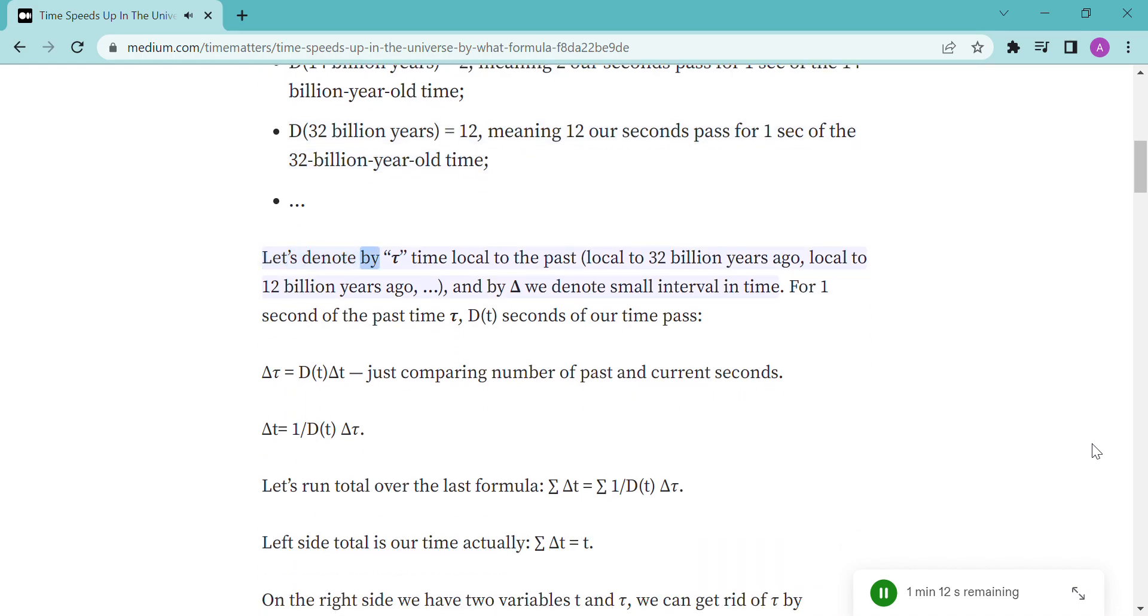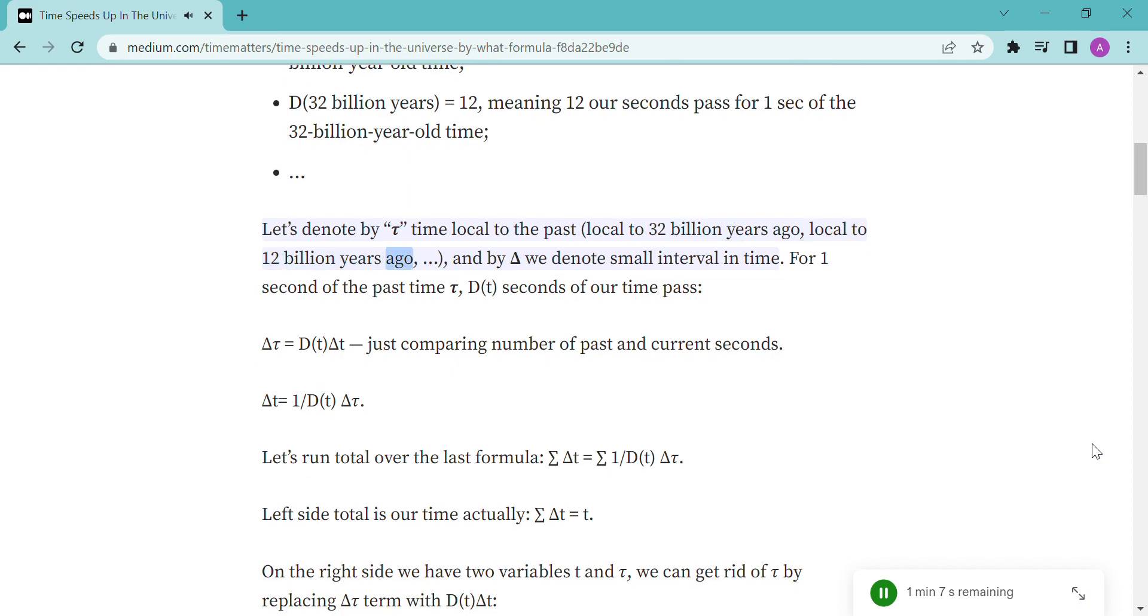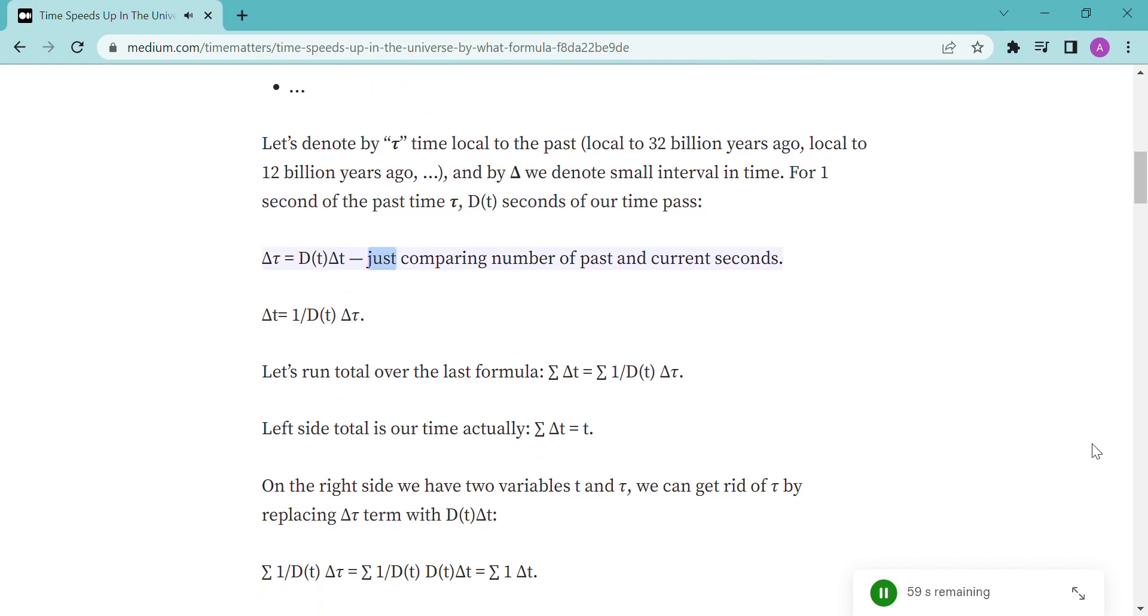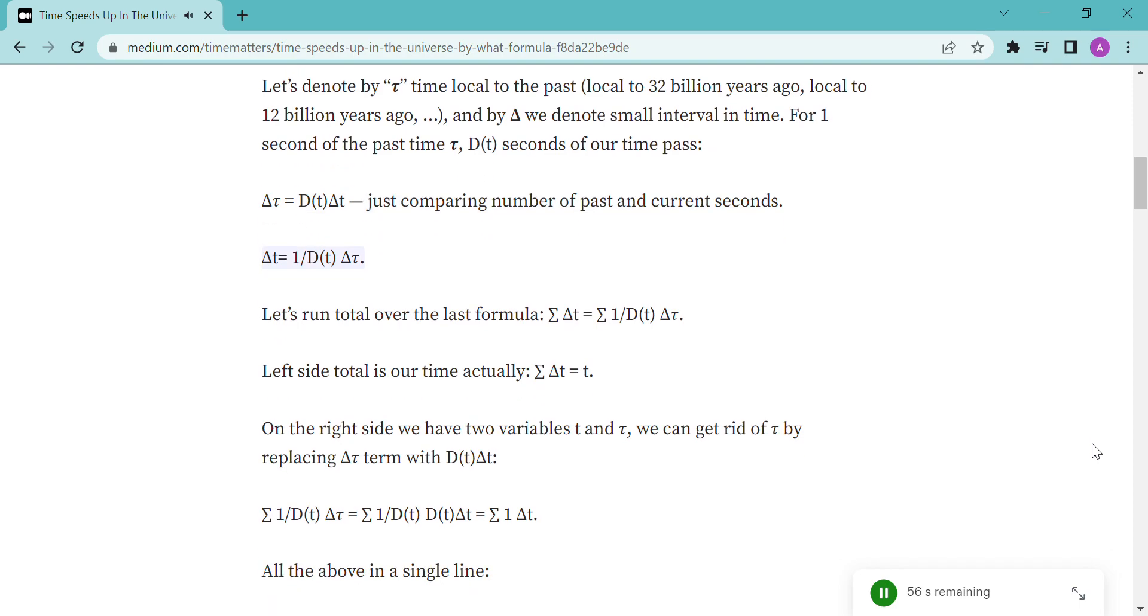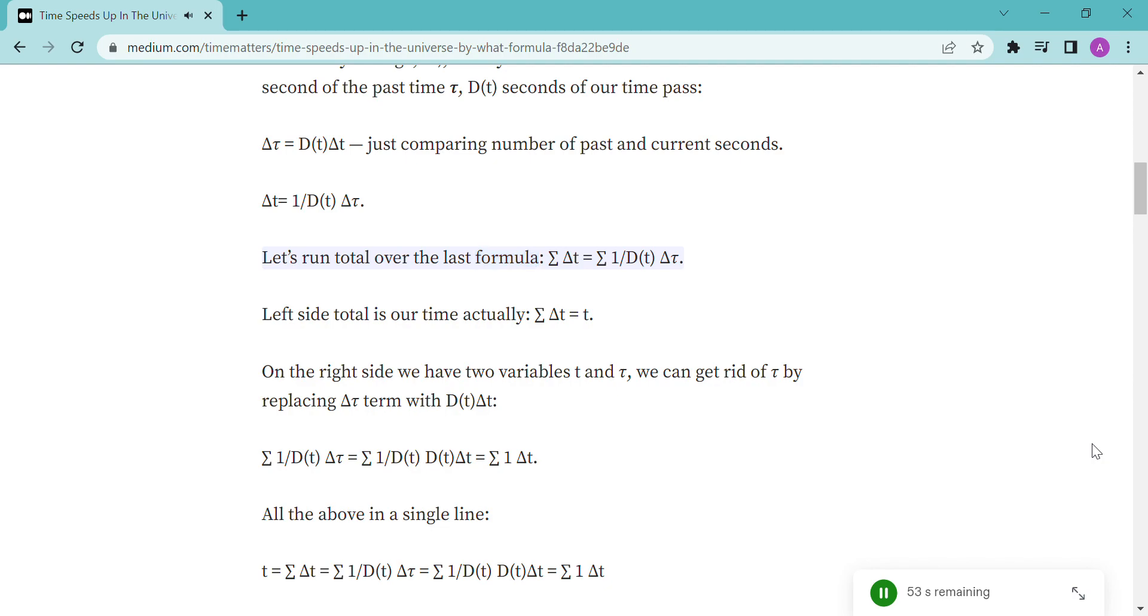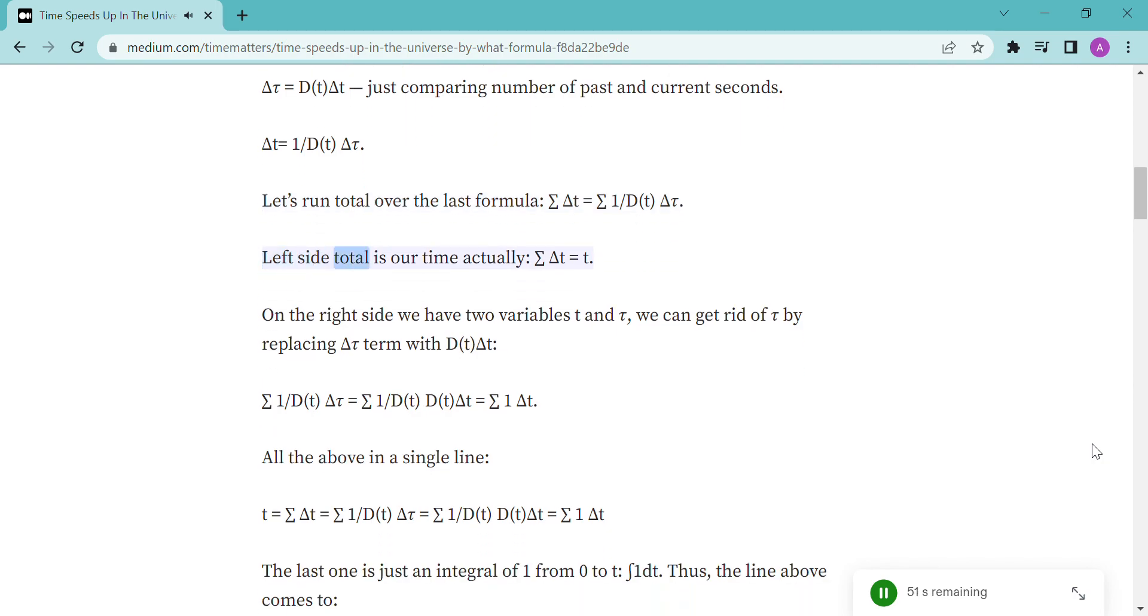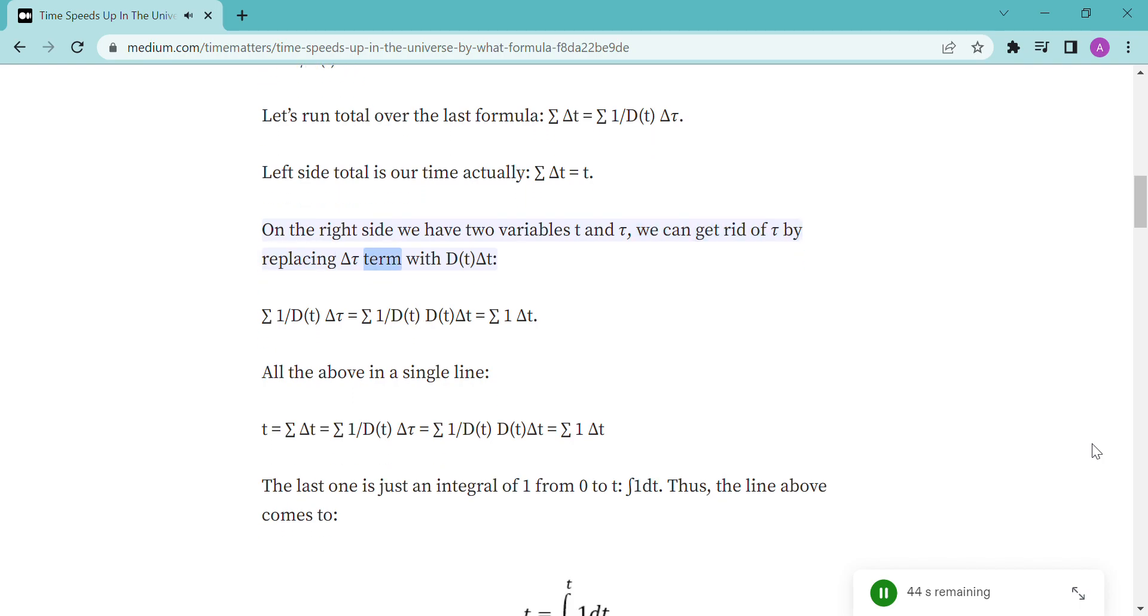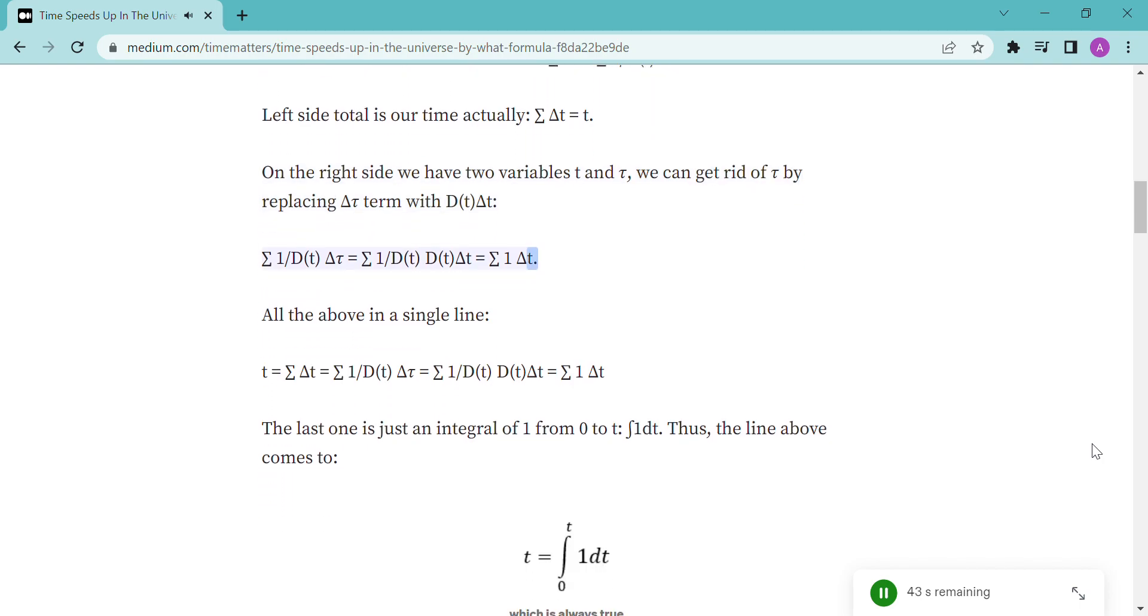Let's denote by T time local to the past, local to 32 billion years ago, local to 12 billion years ago, and by delta we denote small interval in time. For one second of the past time T, DT seconds of our time pass. Delta tau equals DT delta T, just comparing number of past and current seconds. Delta T equals 1 over DT delta tau. Let's run total over the last formula. Delta T equals 1 over DT delta tau. Left side total is our time actually, delta T equals T. On the right side we have two variables T and tau. We can get rid of tau by replacing delta tau term with DT delta T. 1 over DT delta tau equals 1 over DT times DT delta T equals 1 delta T.